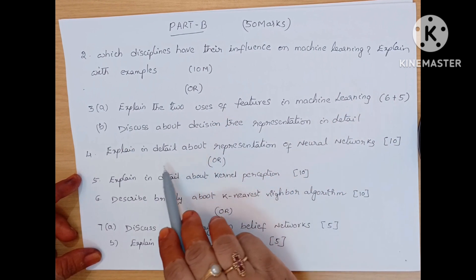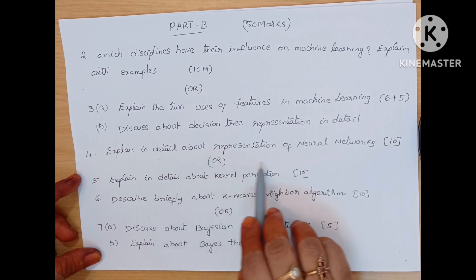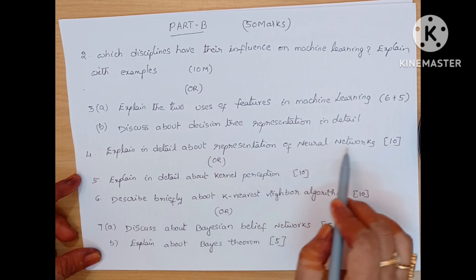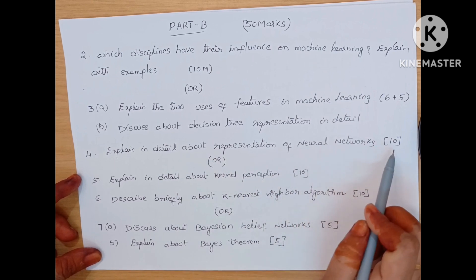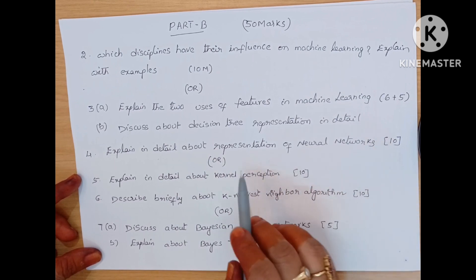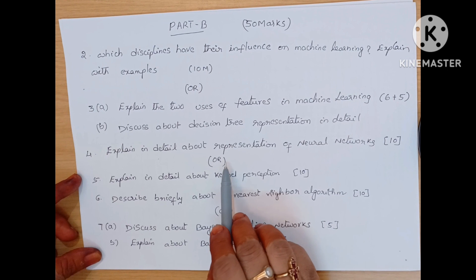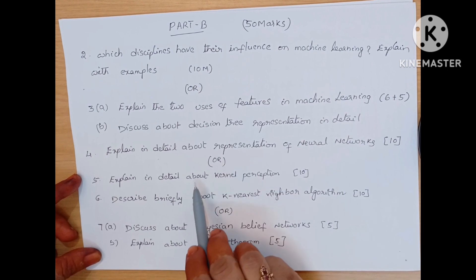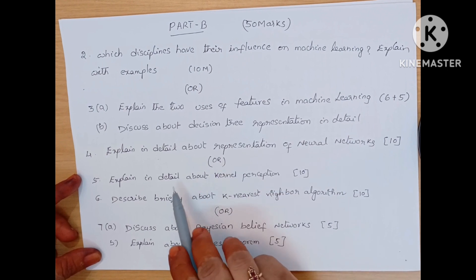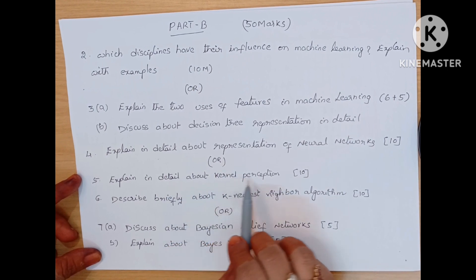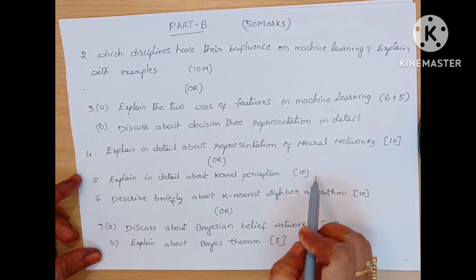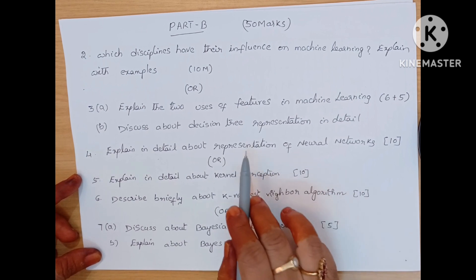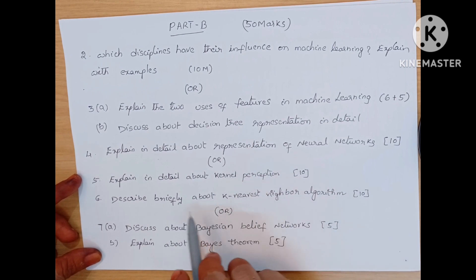Unit 2 questions: explain in detail about representation of neural networks — a direct 10 marks question. Or, the next question is explain in detail about kernel perceptron, also a direct 10 marks question. These two are from Unit 2.